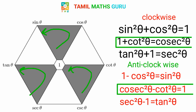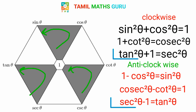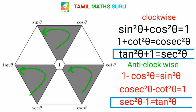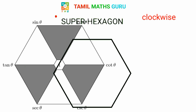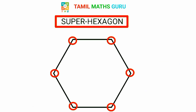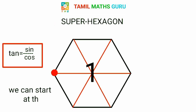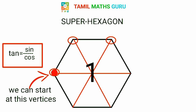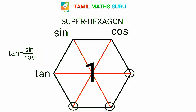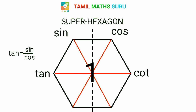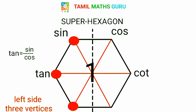We have already discussed this hexagon. Why do we draw a hexagon? We have six vertices. First, we have tan — tan is equal to sin by cos. Clockwise gives us the first vertex. If we write tan, clockwise is sin by cos. We divide the hexagon: left side equals 3 vertices, right side equals 3 vertices.